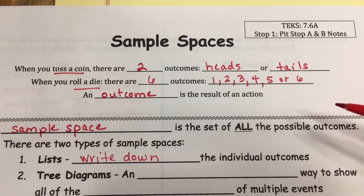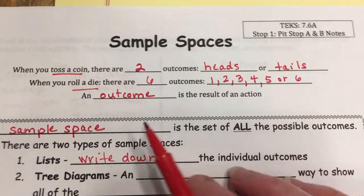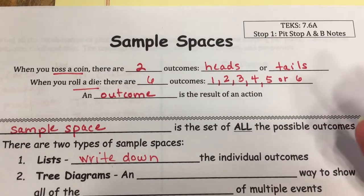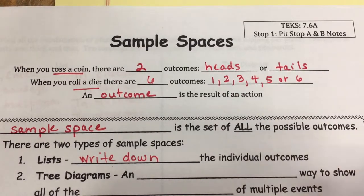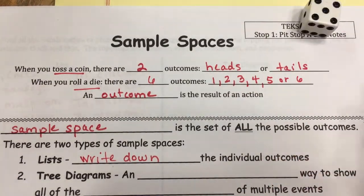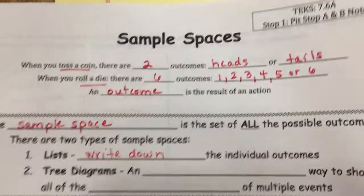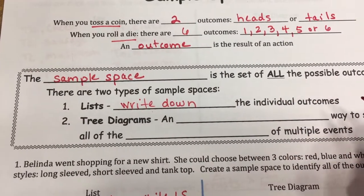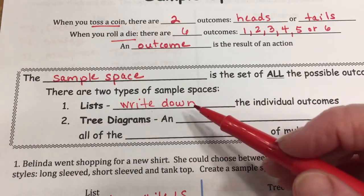We started this set of notes in an earlier video where we talked about sample space. Remember, an outcome is a result of an action — so you flip a coin or roll a dice, it's what's going to happen. When you flip a coin, two things can happen: heads or tails. When you roll a dice, you get one of the sides. When you take all those possibilities and make a list, you get a sample space.